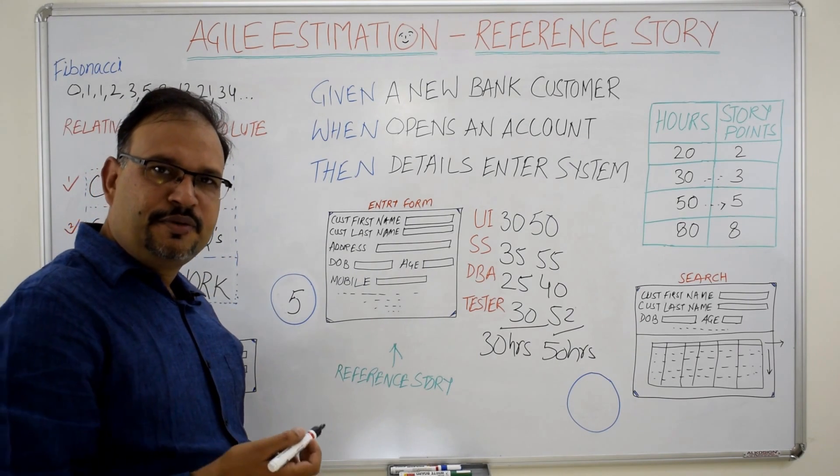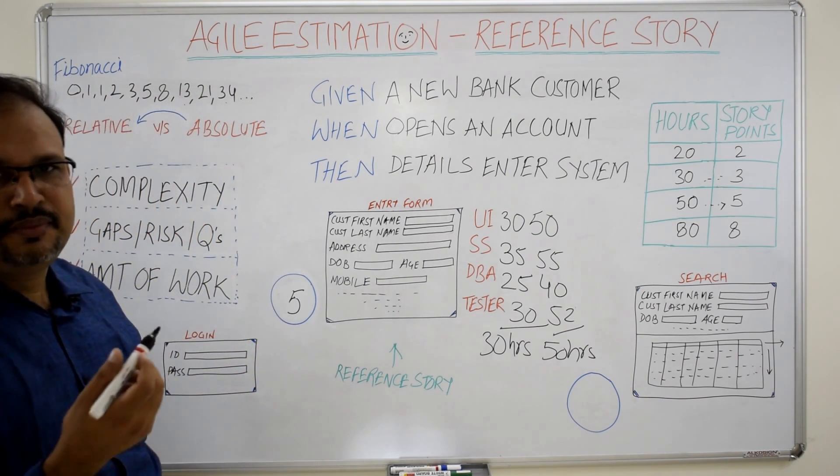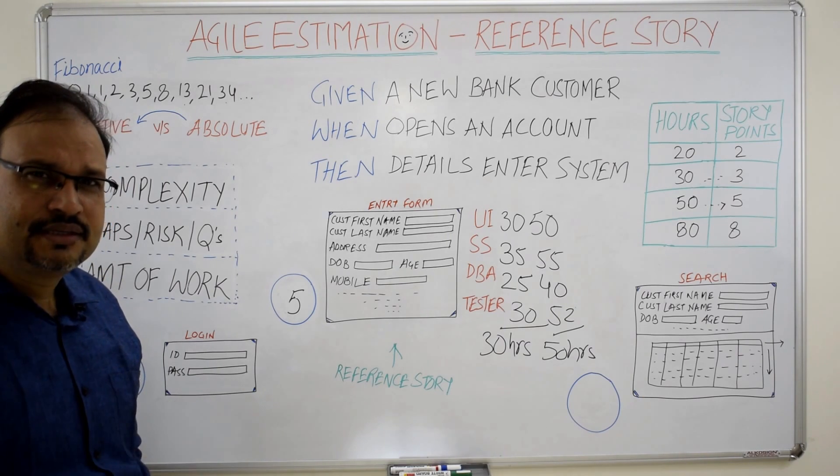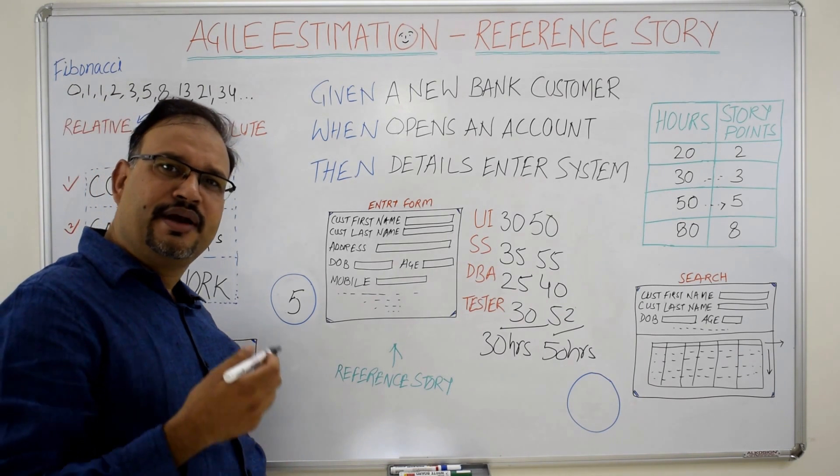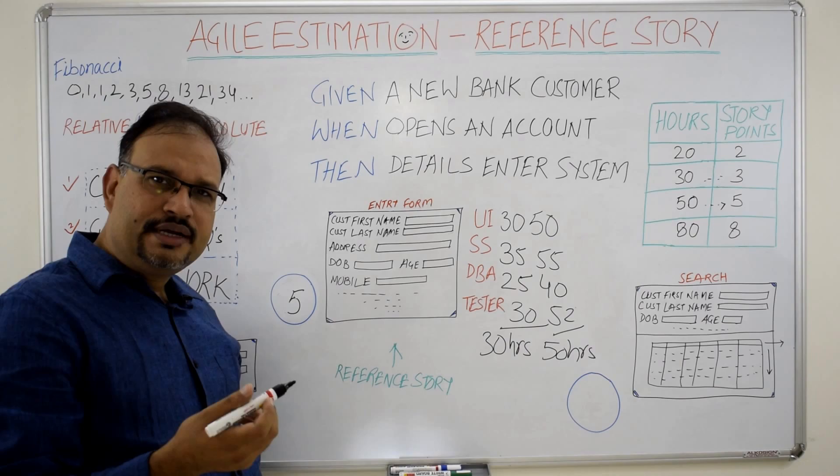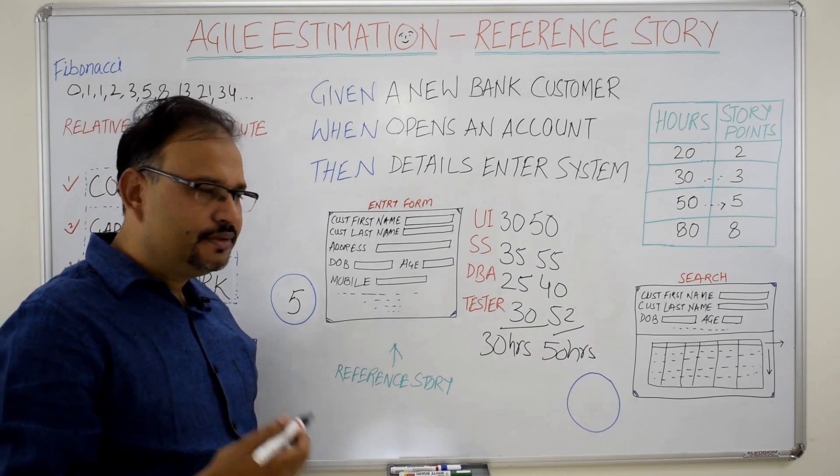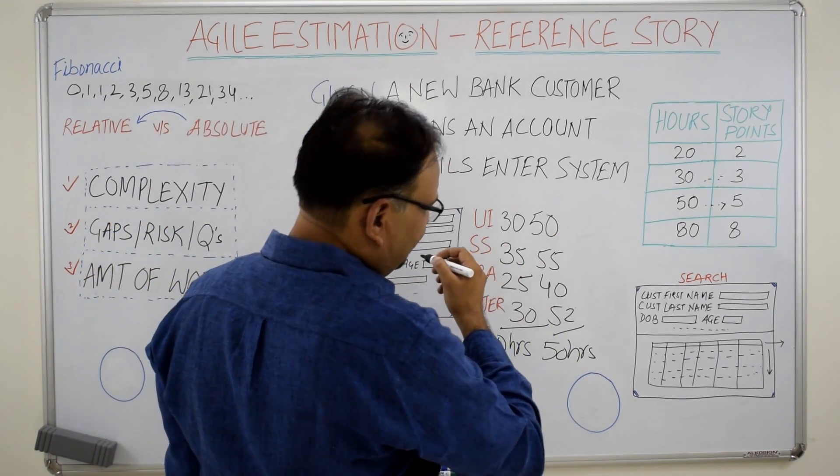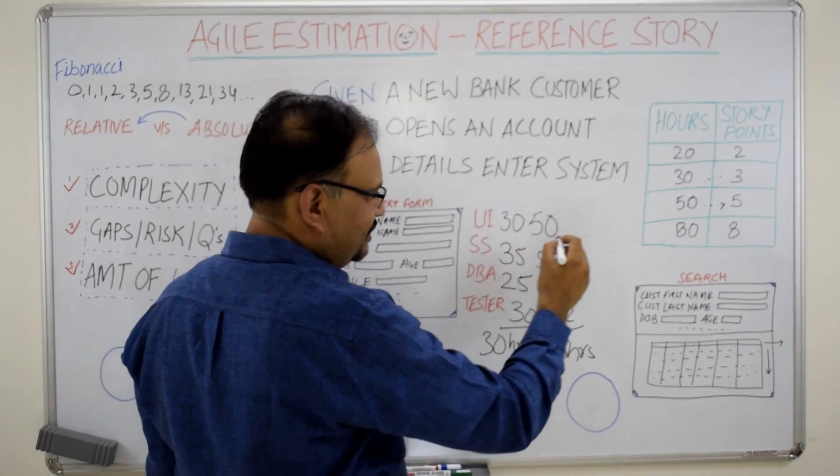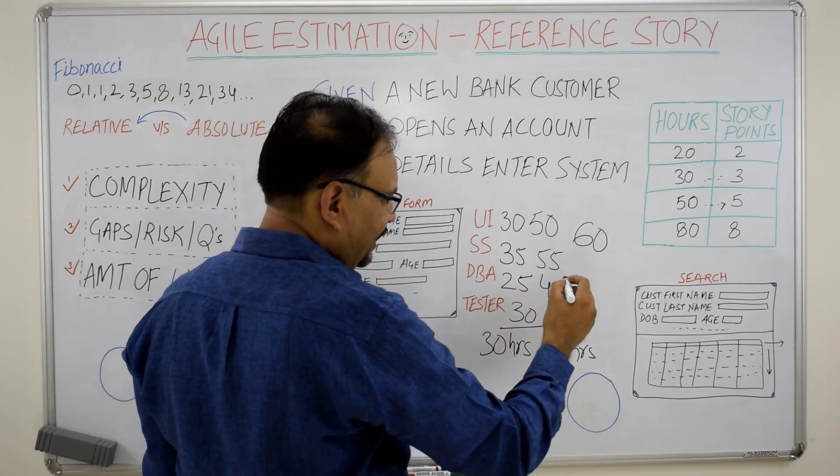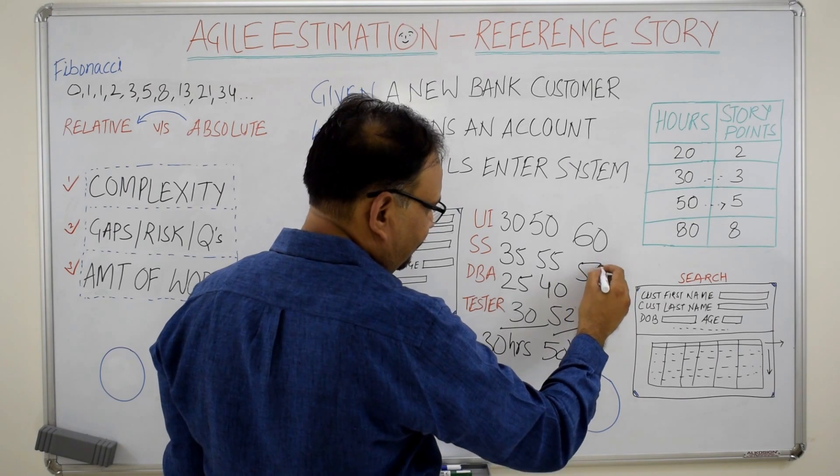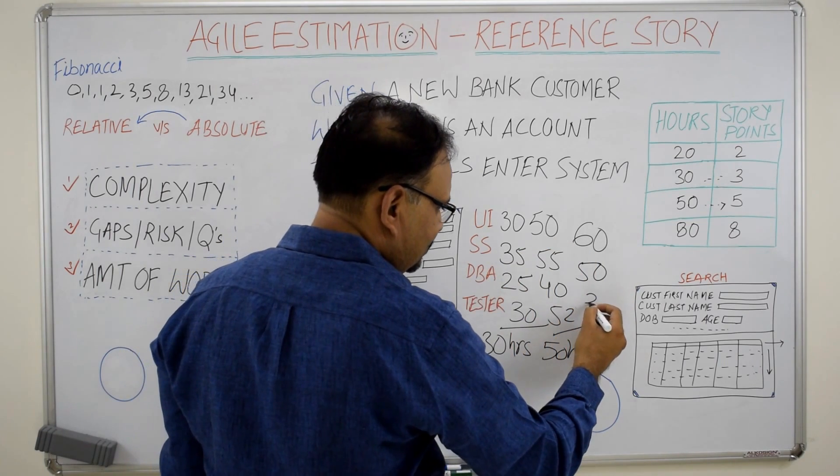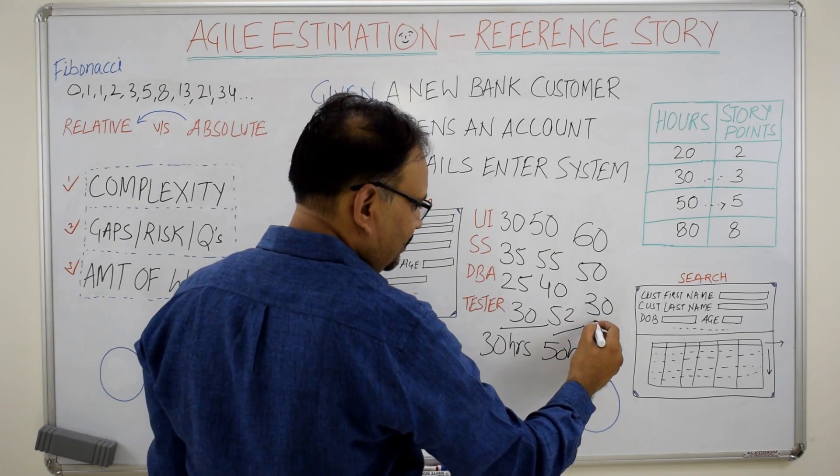Now whatever the estimate I given here, they are close enough estimates which team can easily agree. There may be a case where team is giving some random numbers or some outliers which need to be agreed upon. For example UI team saying that the end to end estimate for this story is 60 hours. Server side saying 50, DB saying 30 hours and tester saying 45.